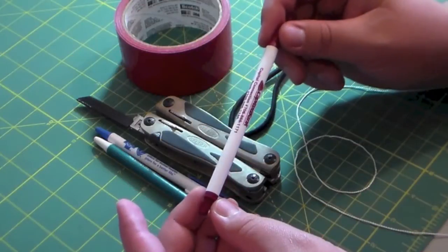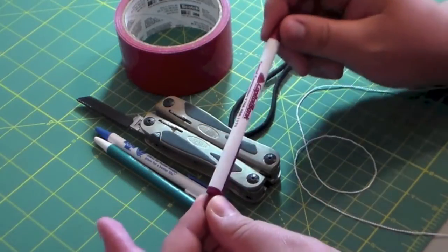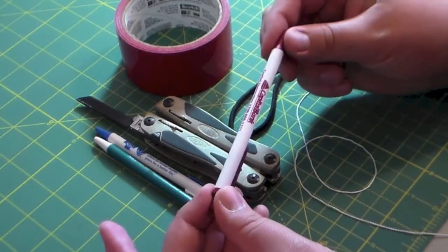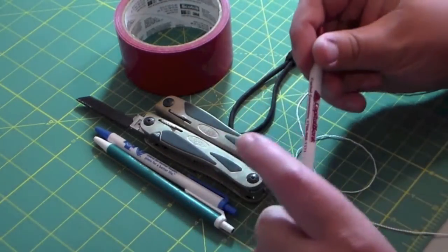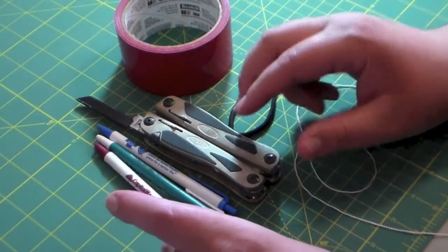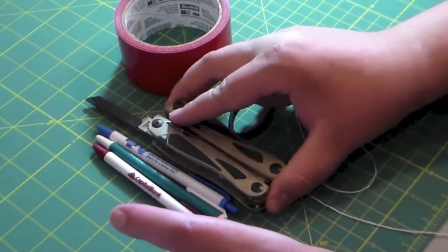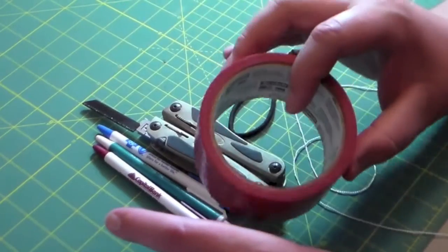Now for this project you're going to need a few things. You're going to need a BIC pen. This is just a simple pen that you pick up at a bank or a hospital and you're only going to need the shaft. Second you're going to need a saw. I'm going to use the saw on this multi-tool. You're going to need a roll of duct tape,